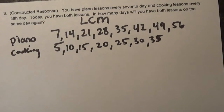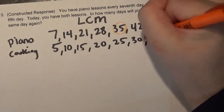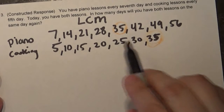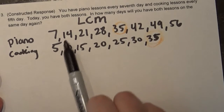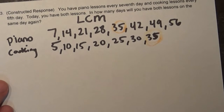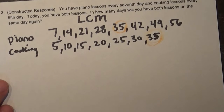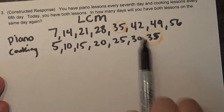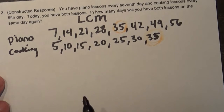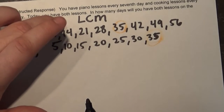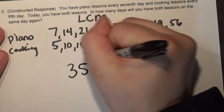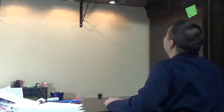Alarm bells are probably going off right now because you recognize that we have 35 here and 35 there. So 35 is going to be my least common multiple. Just double-checking — are there any other numbers smaller that might be even lower than that? No. So 35 is my least common multiple. That means in 35 days I'm going to have both piano and cooking again. If I have piano at seven days, 14, 21, 28, 35 — and cooking matches up again in 35 days. If we know LCM and how to find the least common multiple, that's all we're doing.